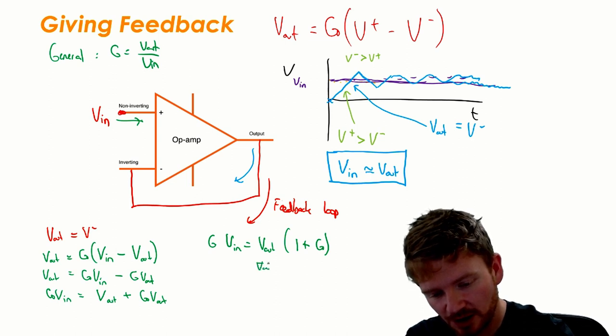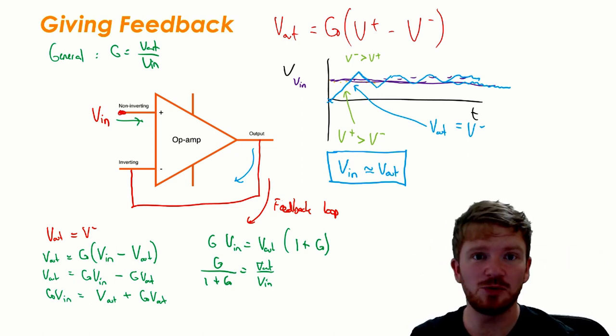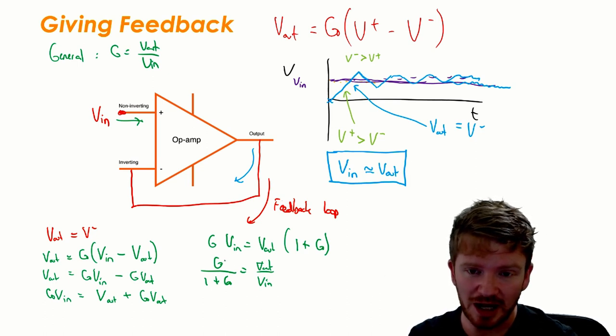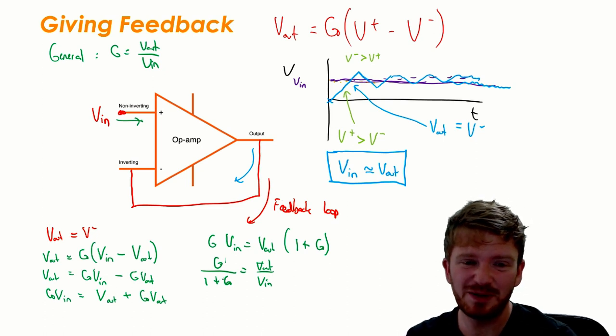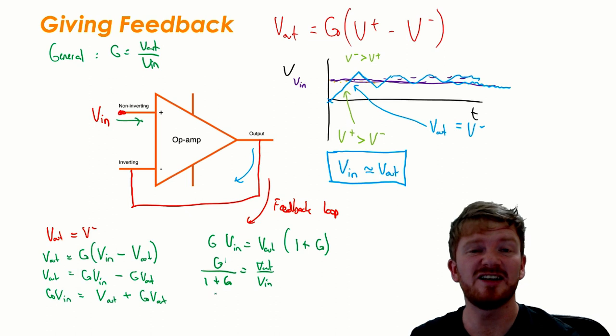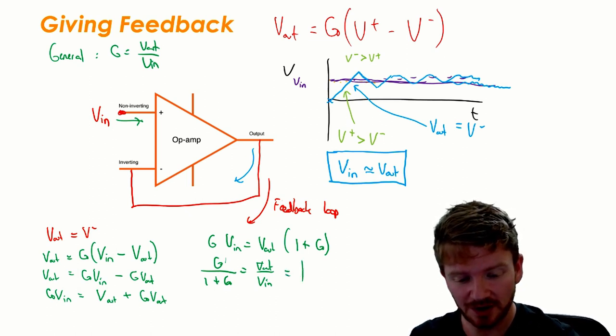So I can say V out divided by V in is equal to gain over 1 plus the gain. Now the gain is approximately infinity - the gain is massive. So a massive number divided by 1 plus a massive number is about the same as saying a massive number divided by a massive number. If G is huge, adding 1 to it doesn't change it.